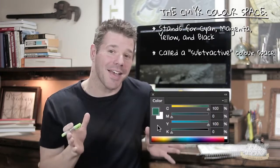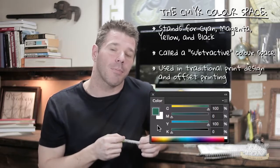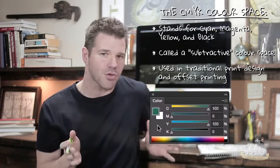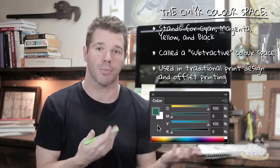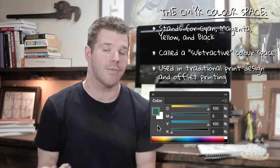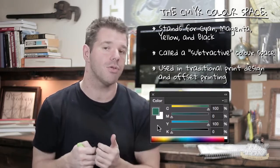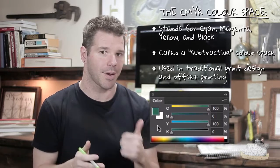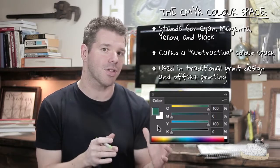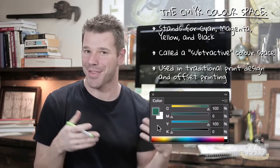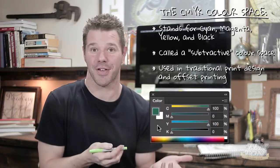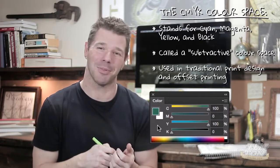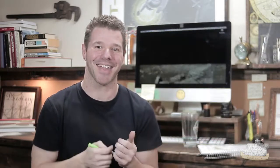CMYK is used in traditional print design and traditional offset printing. CMYK is not used in web design. I come from a traditional print design background, so my brain thinks in CMYK even when building websites. What I wind up doing — as a personal preference — is I work on RGB images but use CMYK sliders. So the image is in the RGB color space, but I'm interacting with it through a CMYK interface.